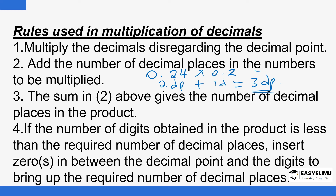Sometimes you'll have instances when the number of digits obtained — for example, 24 by 2 gave 48, which has 2 digits — is less than the required number of decimal places. Here the required decimal places are three but the product has two digits. When that is the case, you insert zeros between the decimal point and the digits to bring up the required number. So you add a zero, giving 0.048. If we needed four decimal places, we would add two zeros — we'll see how that's done as we continue.